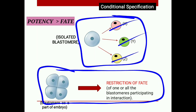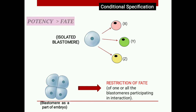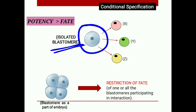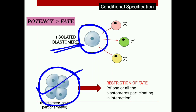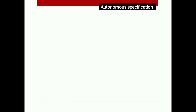So in the conditional specification case, the potency of a cell is greater than the fate of the cell. The fate might be cell type A, but the potential is more — the cell can create different types of cells. The potency is more than the normal fate. Remember: the potential fate of a cell is more than the actual fate of the cell when the cell is present in the embryo. The other case is autonomous specification.